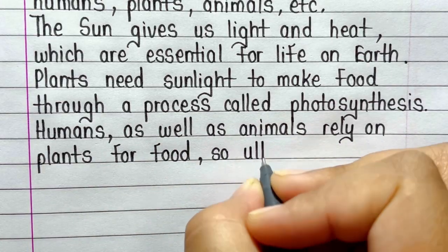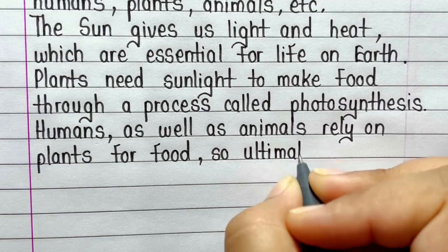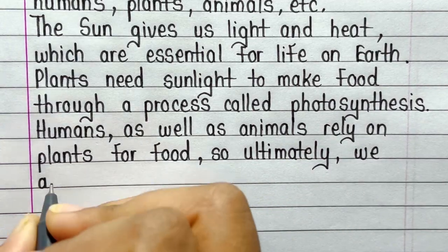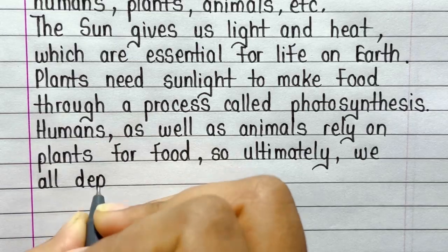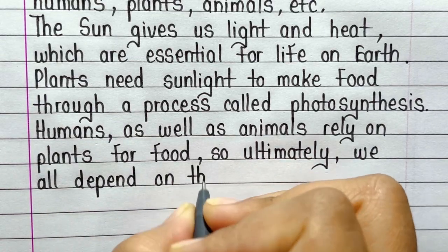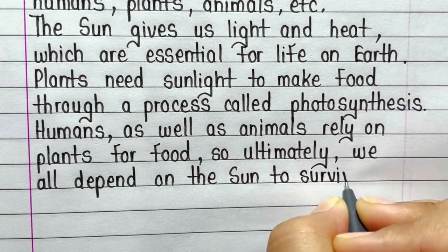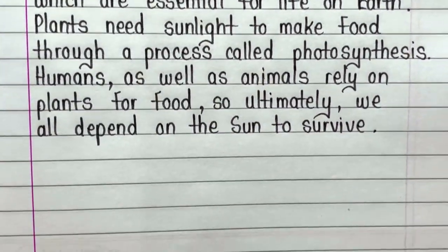The Sun gives us light and heat, which are essential for life on Earth. Plants need sunlight to make food through a process called photosynthesis. Humans, as well as animals, rely on plants for food, so ultimately we all depend on the Sun to survive.